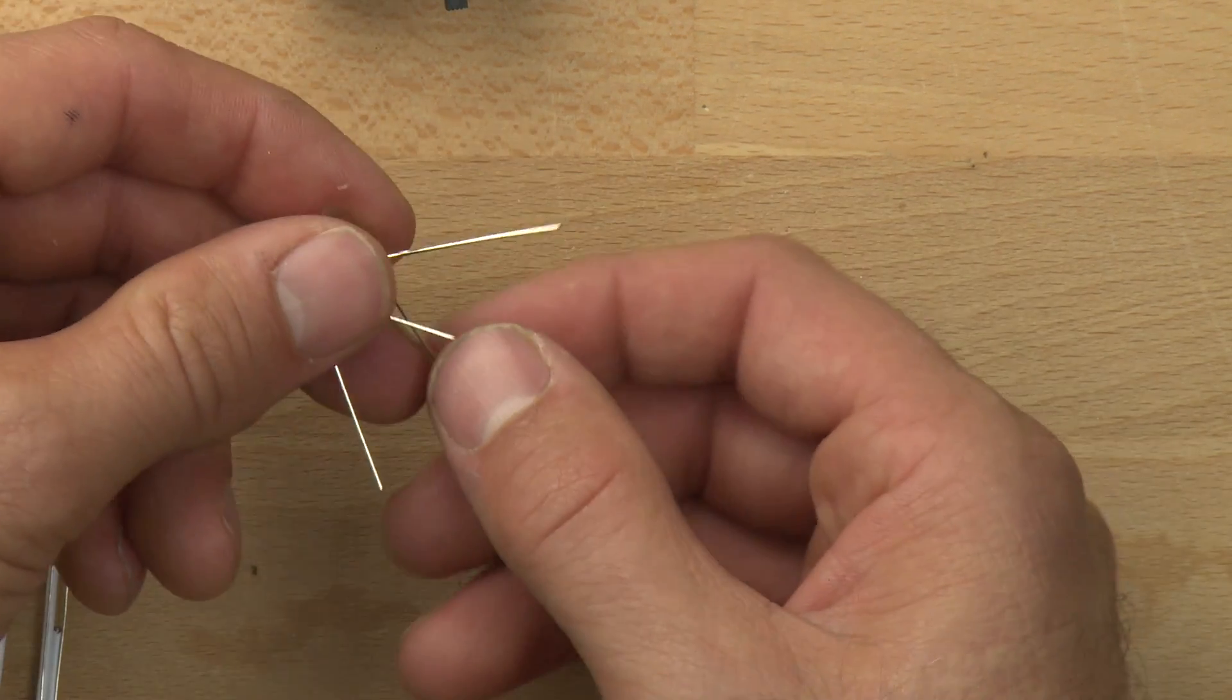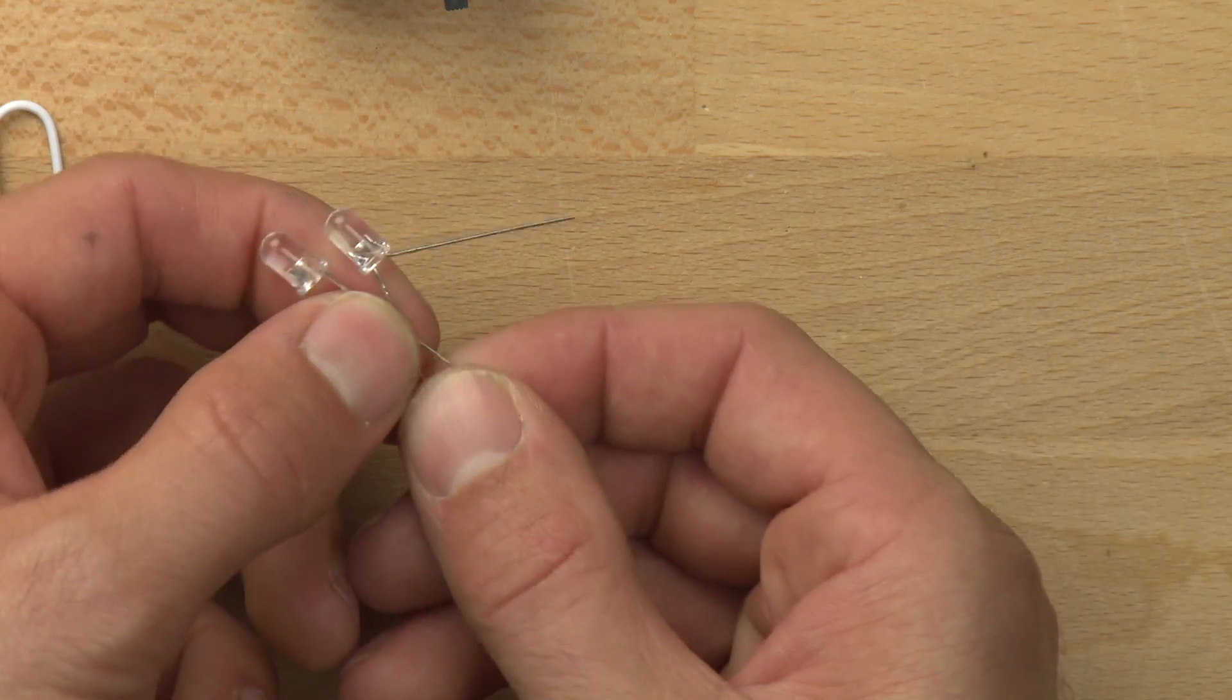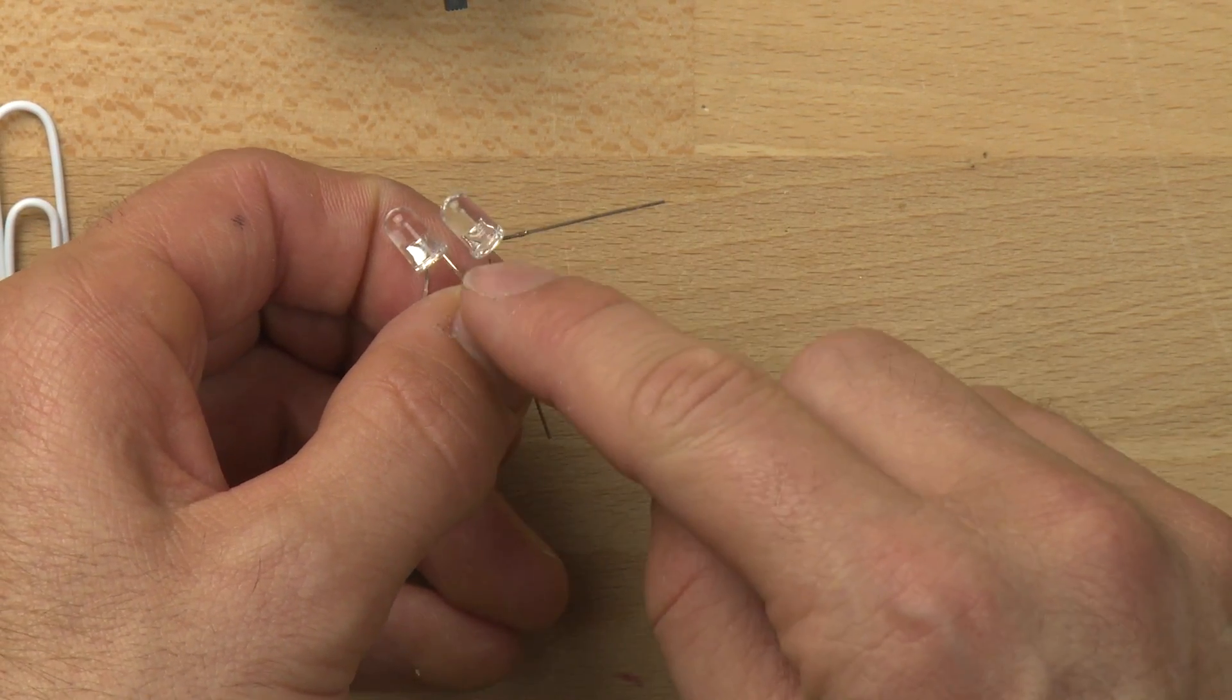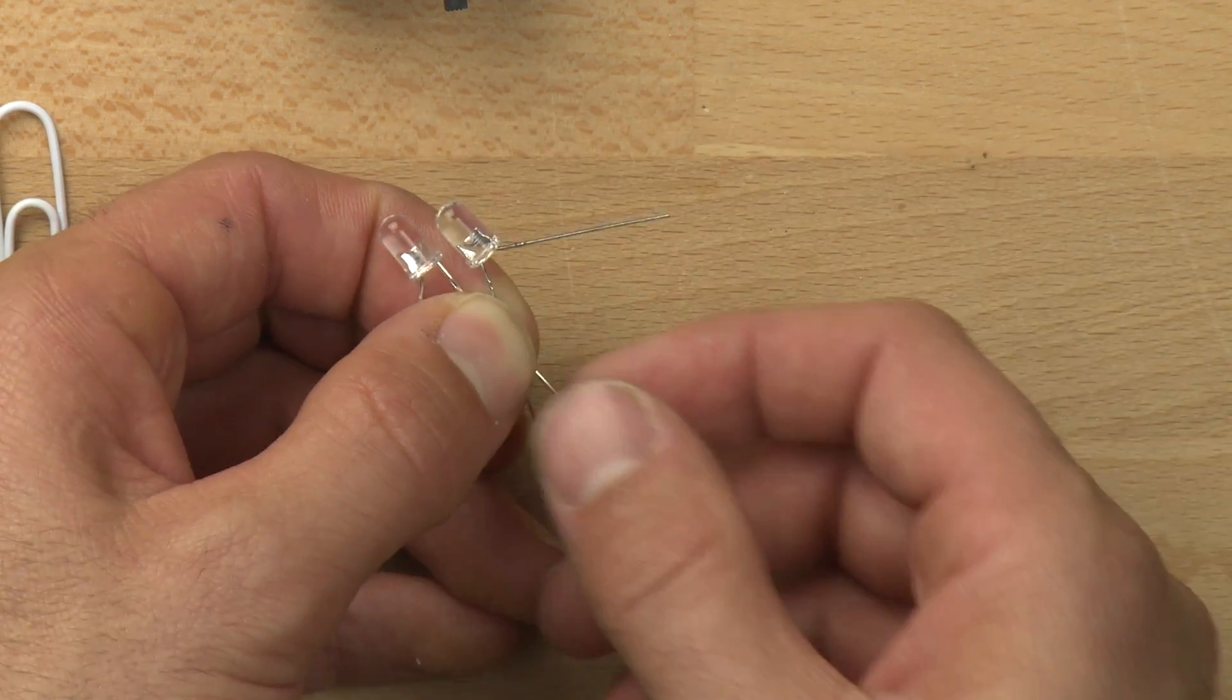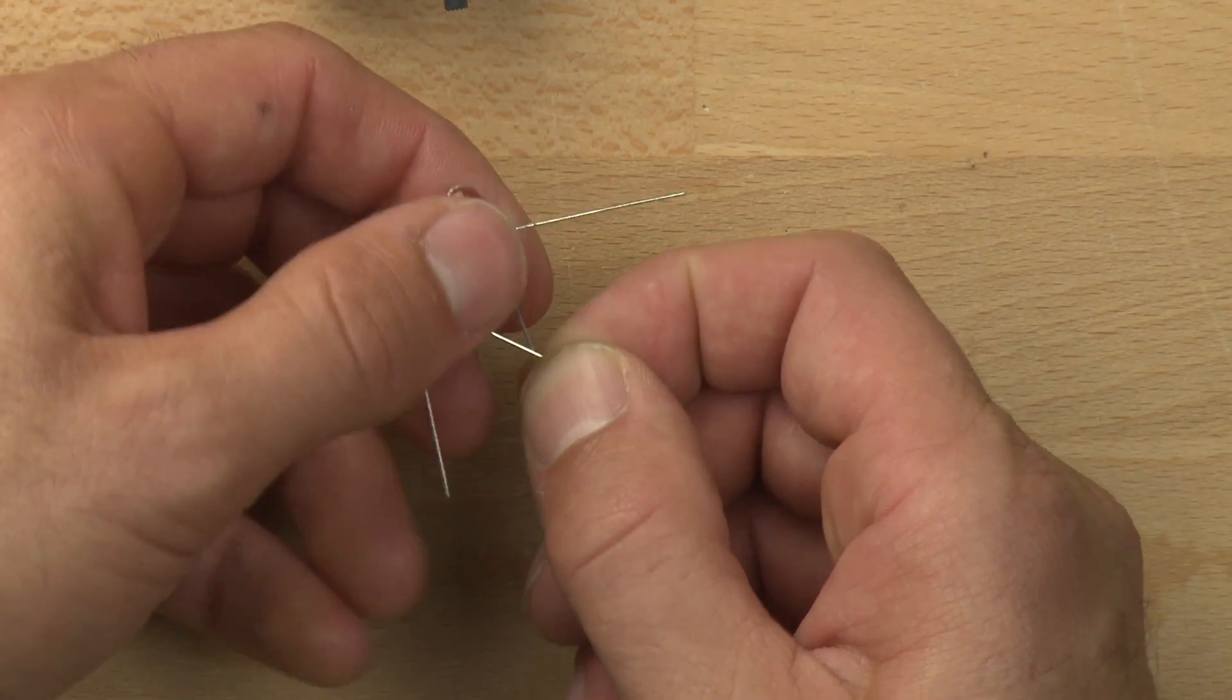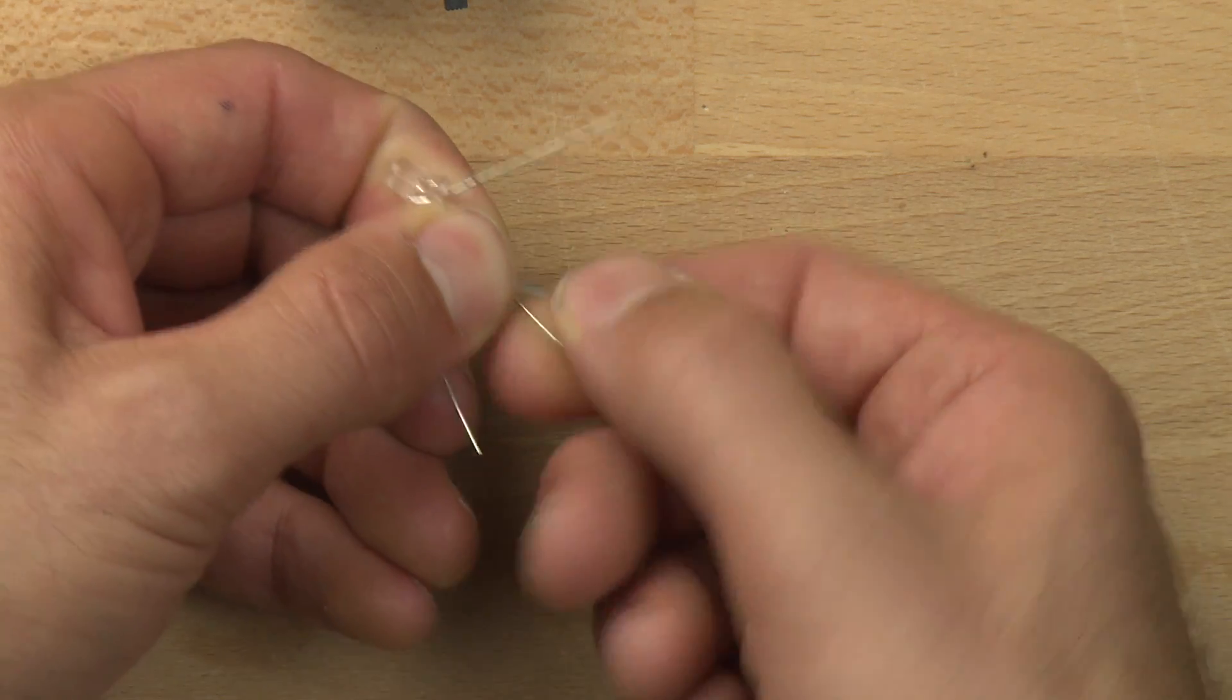So what I like to do is bend them out, bend the legs out just a little bit like that. And you can actually look inside the LED and see there's a different shape and a different size to the different legs. The two smaller pieces are connected to the longer legs—that's the positive side.